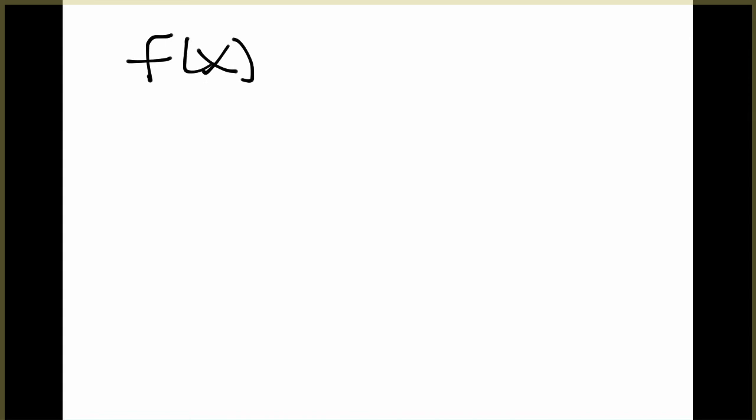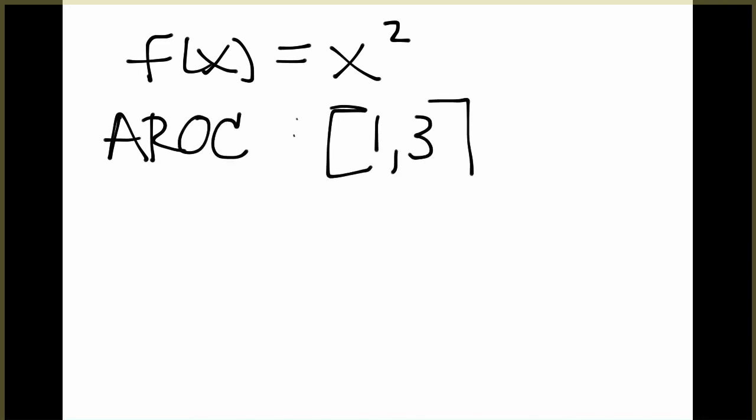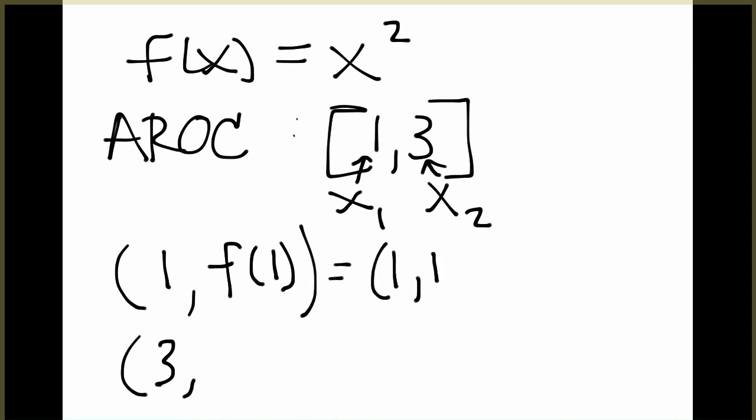Suppose you have the function f of x equals x squared, and we are going to find the average rate of change on the interval 1 to 3 using our formula. So what this means is these are our two x values: x1 is 1 and x2 is 3. So when we are plugging it into the formula, we really need two points. These are both the x values. To find the y values, or the output, we just need to plug these x values into our function. So we would plug in 1 and we would get the point 1, 1. We would plug in 3 to get the point 3, 9.